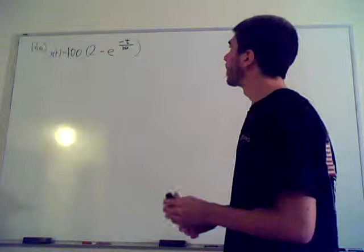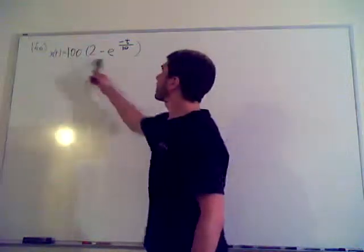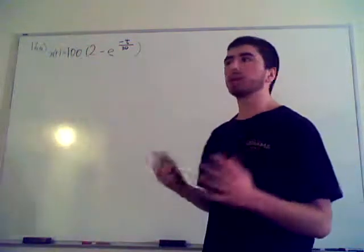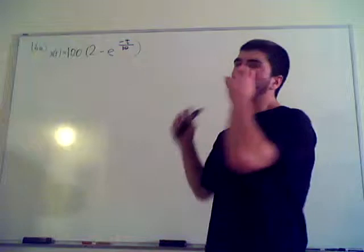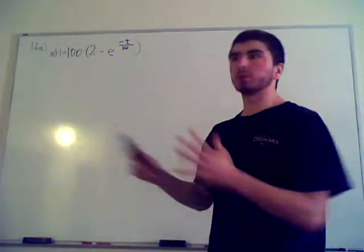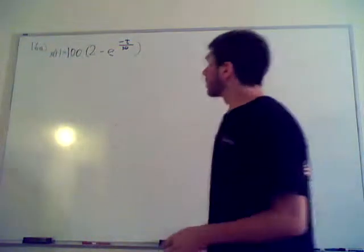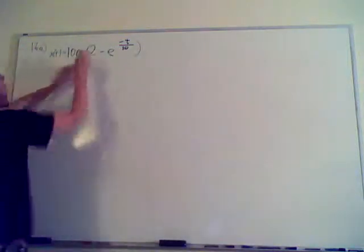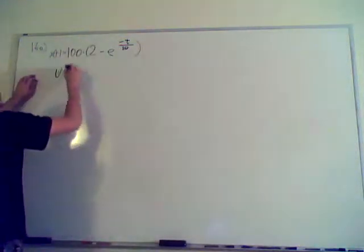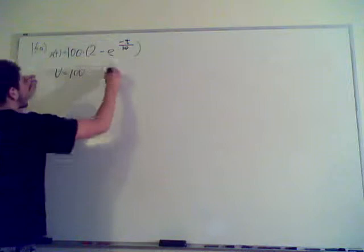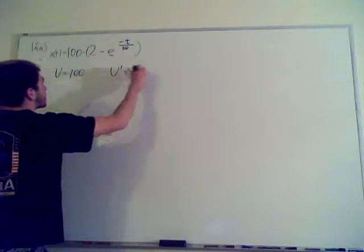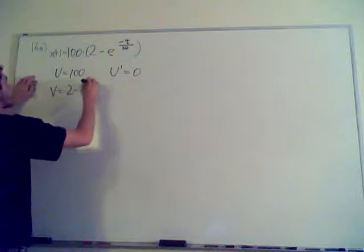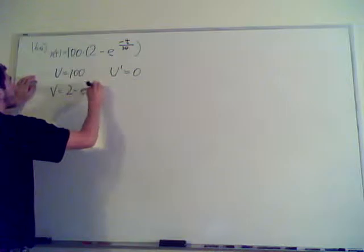So what you have to do is first of all realize there's a product right here. When you take derivatives that have multi-multi-multi steps, just split it up into multi steps. Start out with the product rule, you have a product right here. So you use v=100.